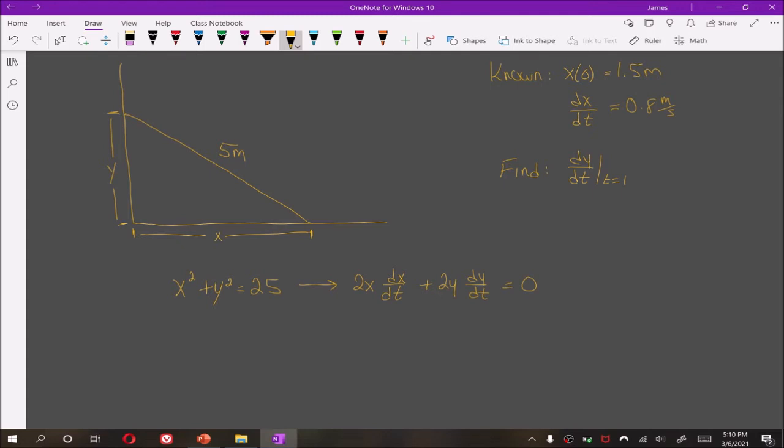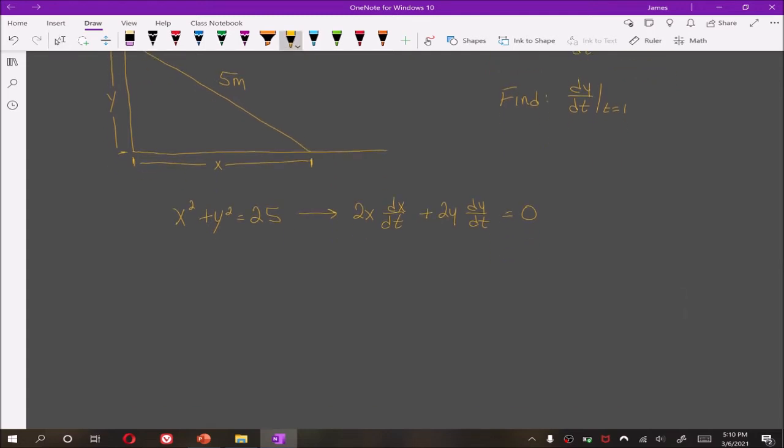We wish to solve for dy/dt. Subtract by the 2x dx/dt then divide by 2y, we get negative x/y dx/dt. We know that dx/dt is a constant 0.8, so this is negative 0.8 times x/y.